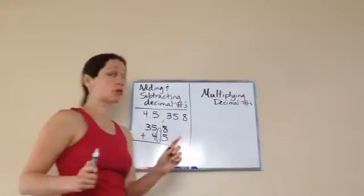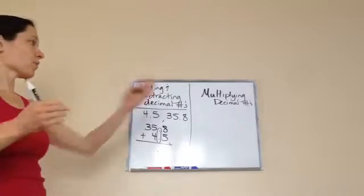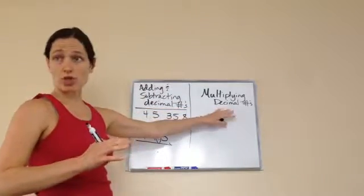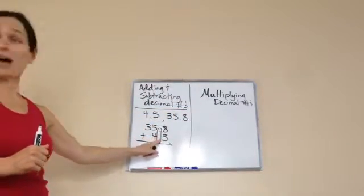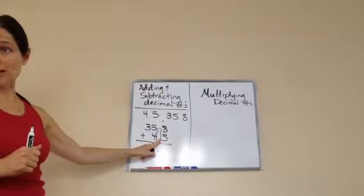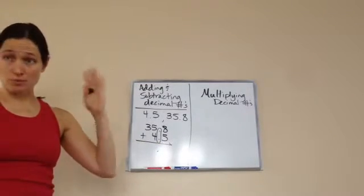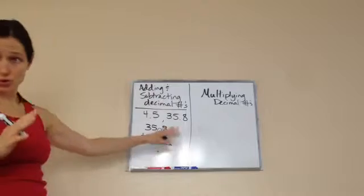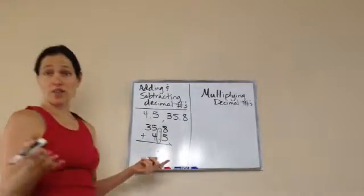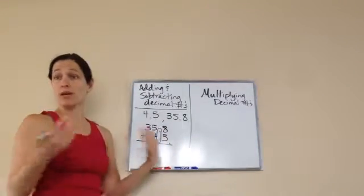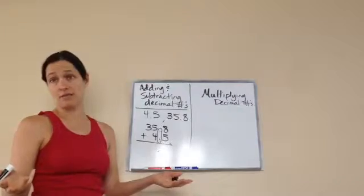But with multiplying decimal numbers, you are not trying to line up the decimals. That's the most important thing you can remember is that you don't do the same rule. And a lot of people get confused, and they end up lining up the decimal number, and they end up getting it wrong because of that.